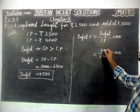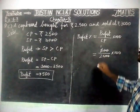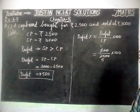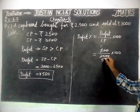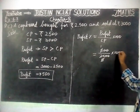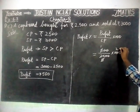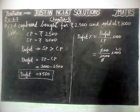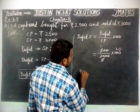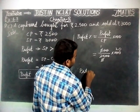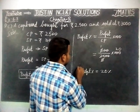Now, we are going to simplify. Two zeros and two zeros cancel. Simplifying: 500 divided by 2500 gives 1 over 5, and multiplied by 100 gives 20. So, profit percentage is equal to 20%.